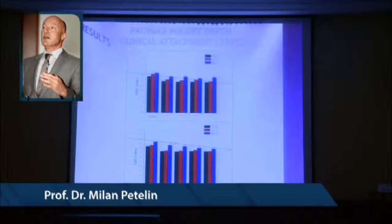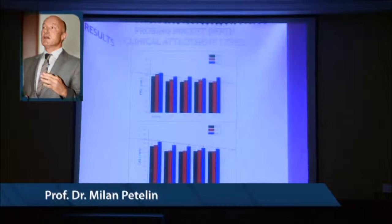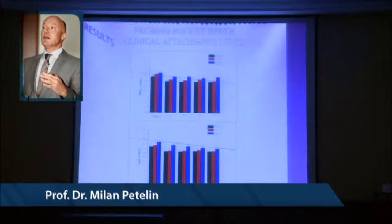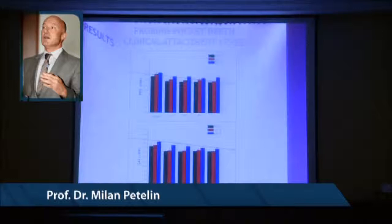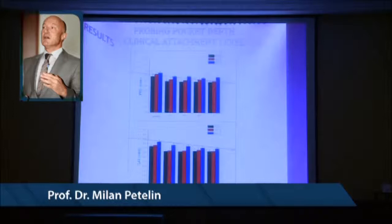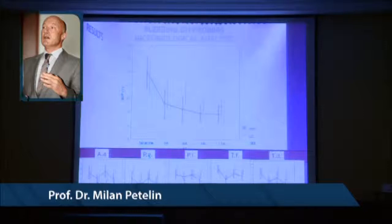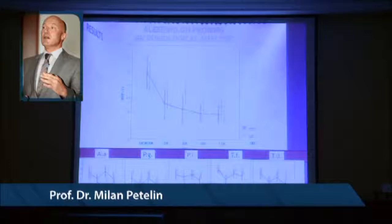All three treatment modalities improved clinical parameters, mostly after three months. With supportive periodontal treatment, we could maintain stable levels of probing pocket depth and clinical attachment level. The same was observed with bleeding on probing, but with PDT we achieved a greater reduction in bleeding on probing after initial treatment — after three months and after 12 months.